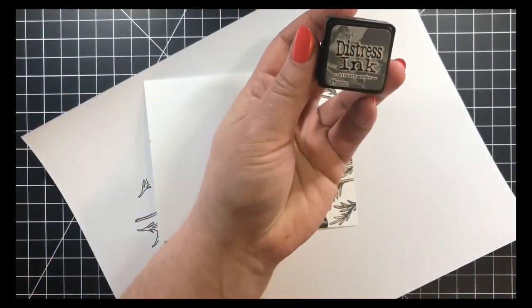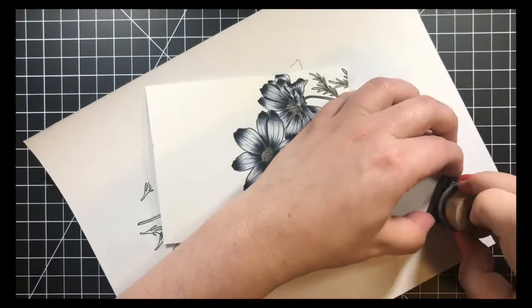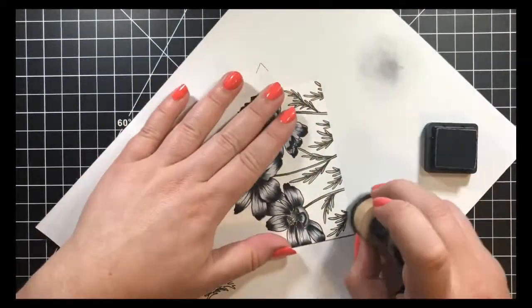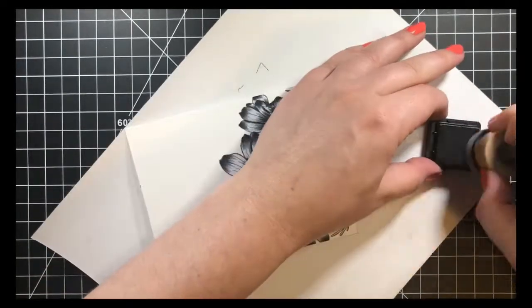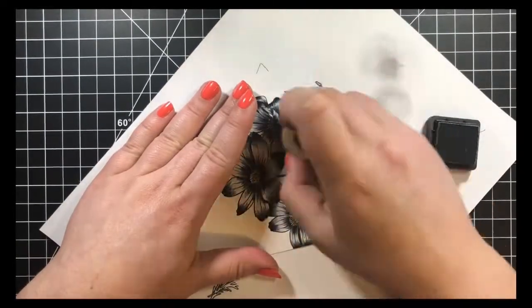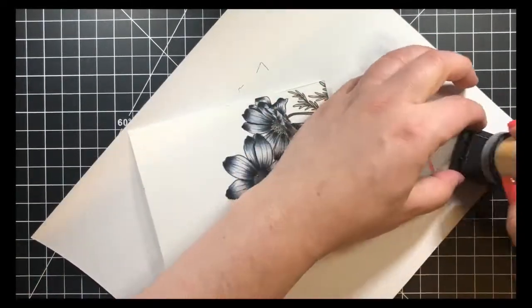So I've decided to take Hickory Smoke Distress Ink and I'm using my ink blending tool here. I'm dabbing off a majority of it and then going on to the card panel from the bottom up with a very light hand.